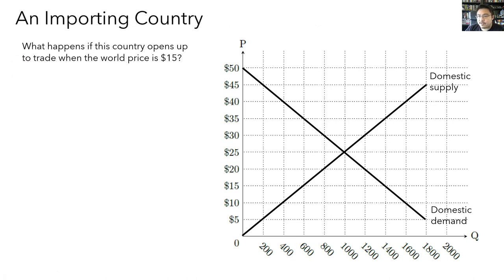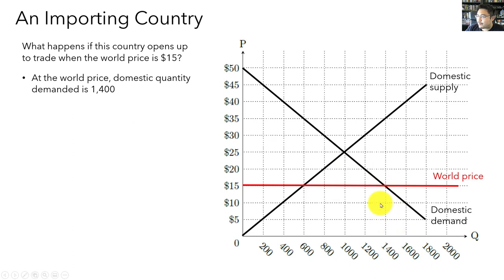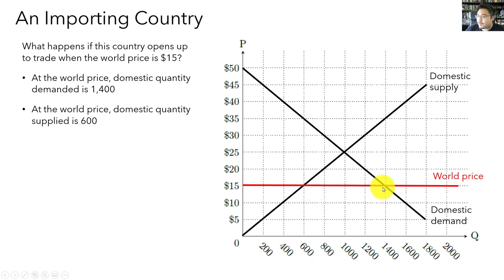Let's do an example. We have domestic demand and domestic supply in one country's market for coffee, and we're going to ask what happens if this country opens up to international trade when the world price is $15, as opposed to their autarky price of $25. We draw a line at the world price of $15. At this world price, domestic demand and domestic supply don't line up: domestic demand is 1,400 bags of coffee and domestic supply is 600 bags of coffee, so there's going to be a difference.